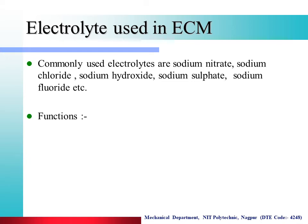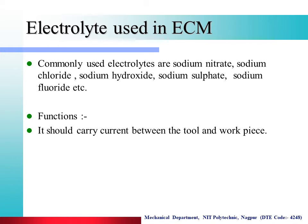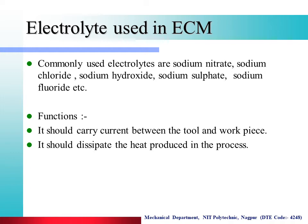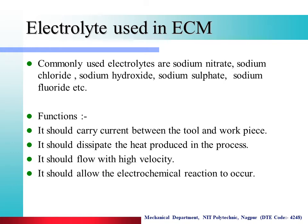Functions of the electrolyte in the Electrochemical Machining process: First, it should carry current between the tool and workpiece — the electrolyte solution carries current between the tool and workpiece. Second, it should dissipate the heat produced in the process. Third, it should flow with high velocity between the tool and workpiece. Fourth, it should allow the electrochemical reaction to occur between the tool and workpiece.